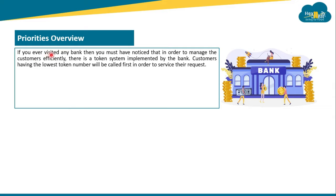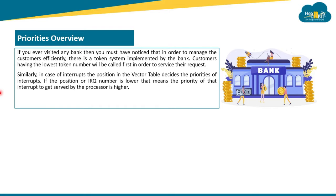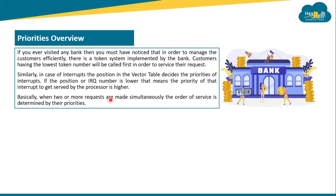Let's take an example: if you've ever visited a bank, you may have noticed a token system to manage customers efficiently. Customers with the lowest token number are called first to service their request. Similarly, in the case of interrupts, the position in the vector table decides priority. A lower IRQ number means higher priority. When two or more requests are made simultaneously, the order of service is determined by their priorities.